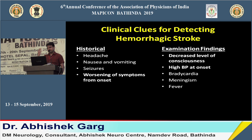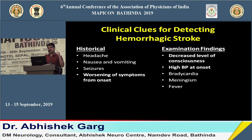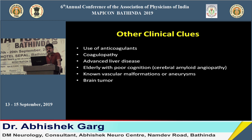When a patient presents with sudden onset focal neurological disturbance, we suspect stroke, but there is a possibility of either ischemic or hemorrhagic type. Certain clinical clues suggest hemorrhagic stroke: headache, recurrent vomiting, seizure at onset, or worsening of symptoms from onset may indicate hemorrhage is more likely than ischemic stroke.